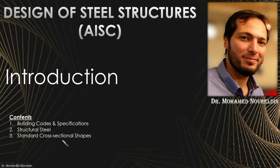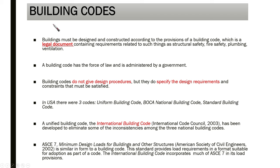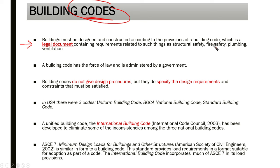The first topic is building codes and specifications. Buildings must be designed and constructed according to provisions of building codes, which is a legal document containing requirements related to structural safety, fire safety, plumbing, and ventilation. The key word here is 'legal document.' A building code has the force of law and is administered by government.